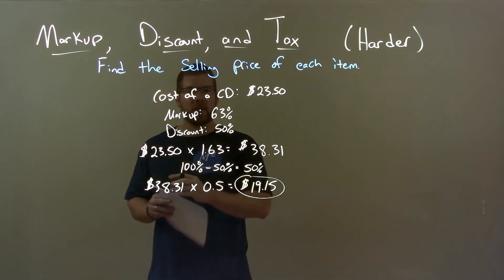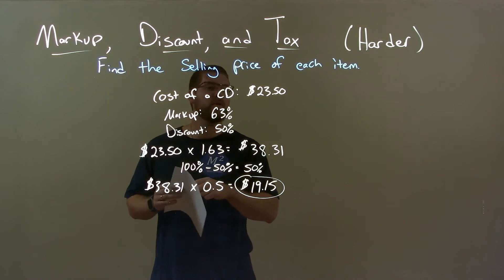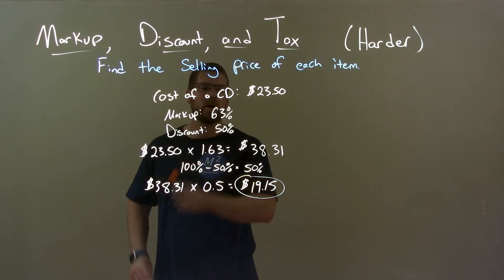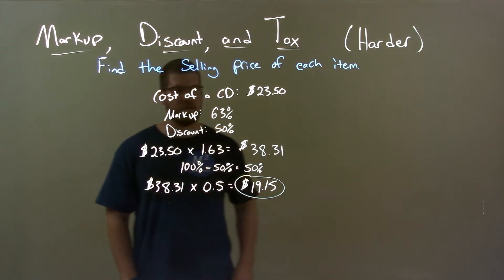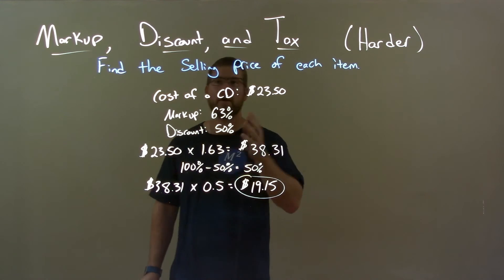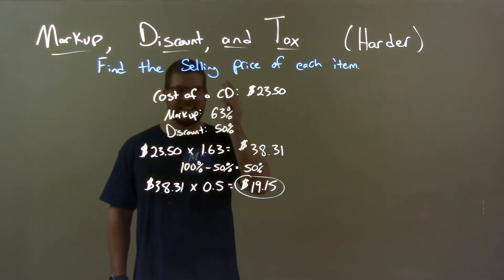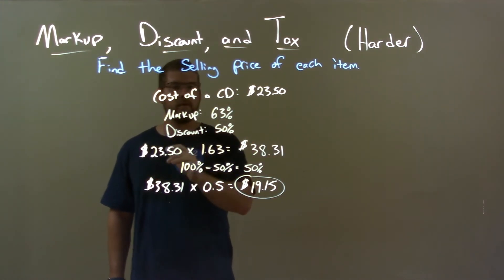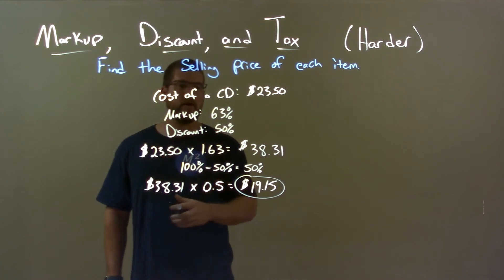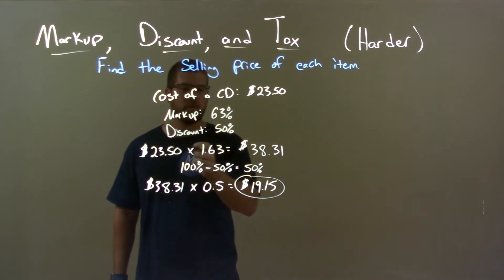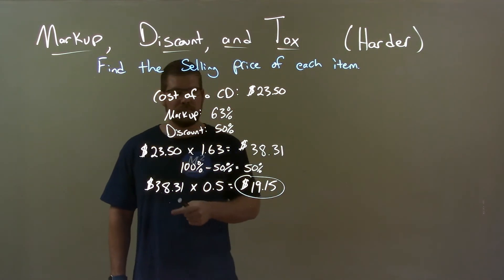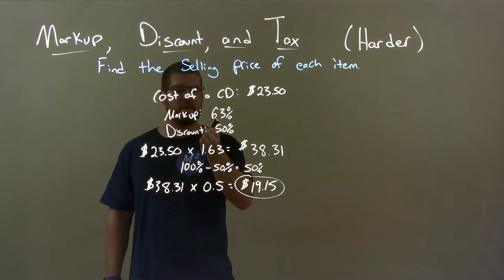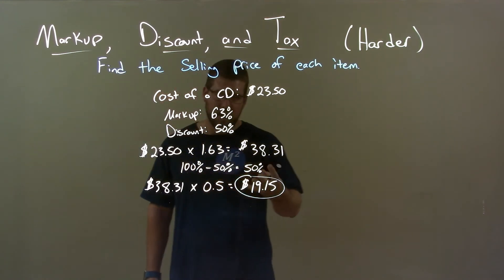Quick recap: we're given the cost of a CD — it is $23.50, its markup is 63%, and discount is 50%. We find the final sale price of this CD. We first started with the markup, took the cost, multiplied by the markup 1.63, and got $38.31. Now, a 50% discount means we pay 50%.